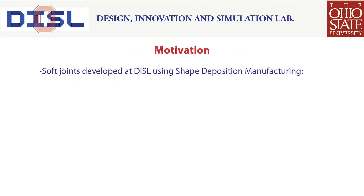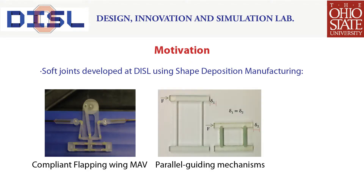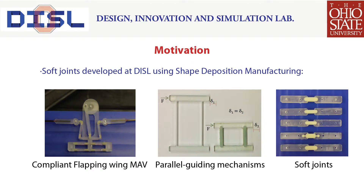Using PRB models, it is possible to develop an intuitive understanding of compliant mechanisms based on rigid body fundamentals. The figure on the left shows a compliant flapping mechanism for a micro air vehicle fabricated at DISL using the method of shape deposition manufacturing. The mechanism consists of many small soft joints and requires minimal assembly. It also has an electric motor and carbon fiber rods embedded in it.